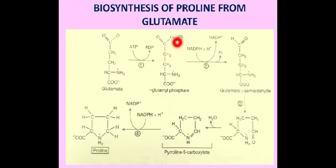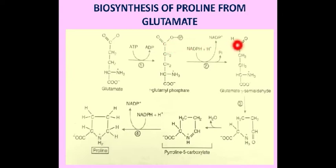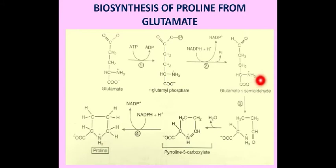In the second step, this gamma-glutamyl phosphate is reduced at the gamma carbon, an orthophosphate is released, and the carboxyl group is reduced to an aldehyde group, producing glutamate-gamma-semialdehyde. This second reaction is catalyzed by the enzyme glutamate dehydrogenase. The glutamate-gamma-semialdehyde then cyclizes to form pyrroline-5-carboxylate, with the oxygen of the carbonyl carbon joining with the amino group and releasing a molecule of water.